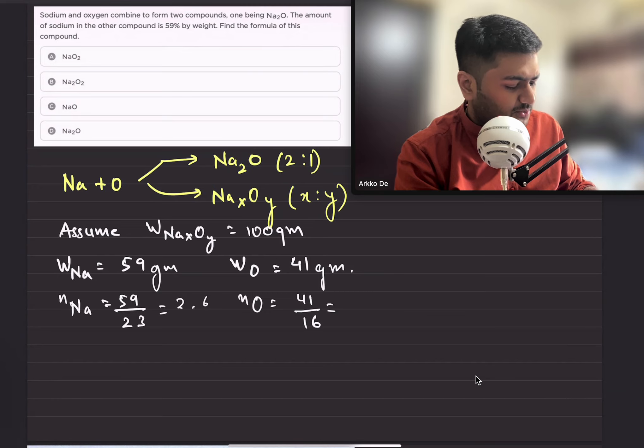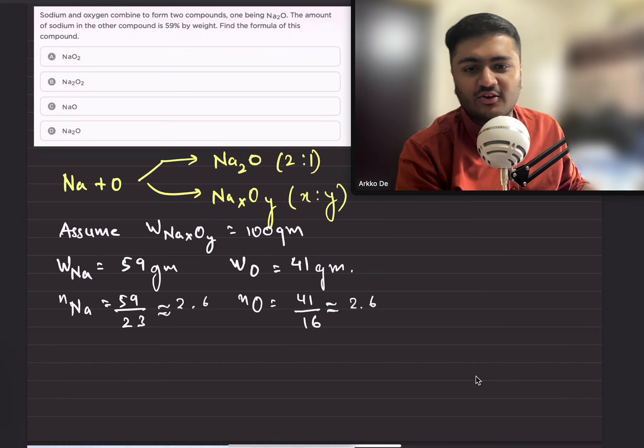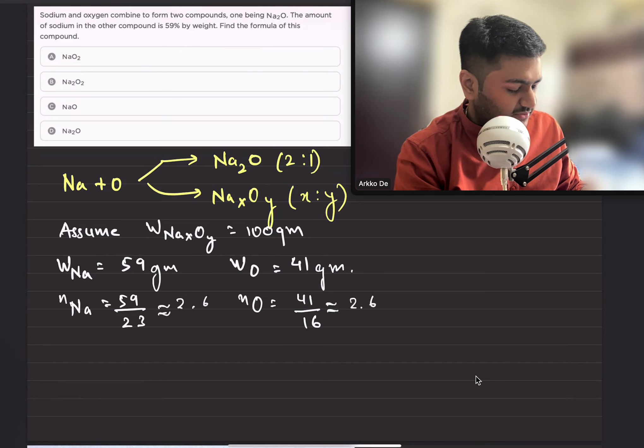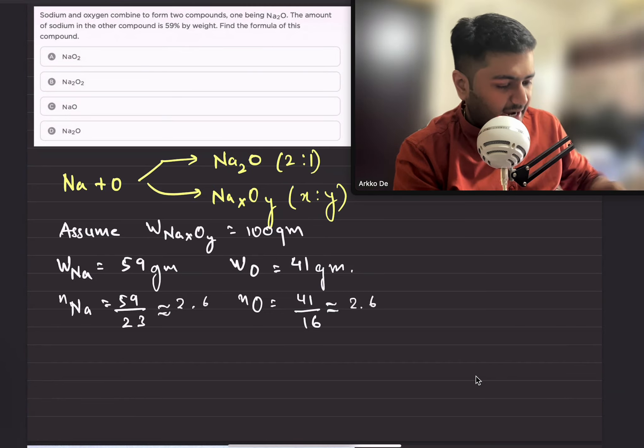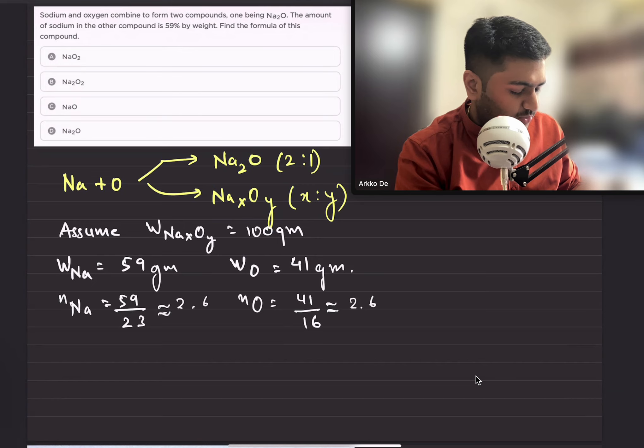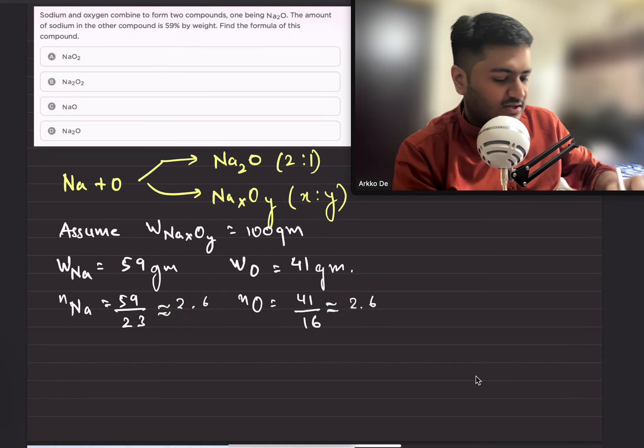Approximately 2.5 to 2.6. This is an approximation I'm doing in my head, so please correct it in the comments if needed. It's roughly 2.6. I'm finding that both the moles are approximately equal, therefore I